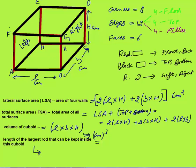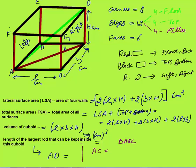Now one last very important concept: the length of the largest rod that can be kept inside this cuboid. By common sense you can observe that AD, drawn with the green line, is the largest rod inside the cuboid. To find AD, first find AC. AC is the hypotenuse of right angle triangle ABC, so by Pythagoras theorem, AC² = L² + B².